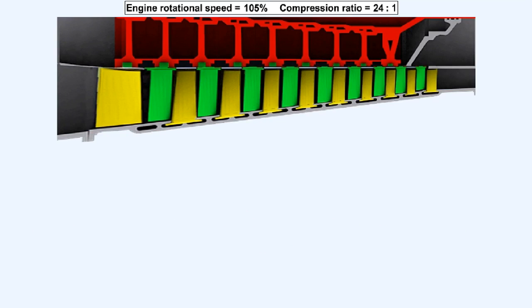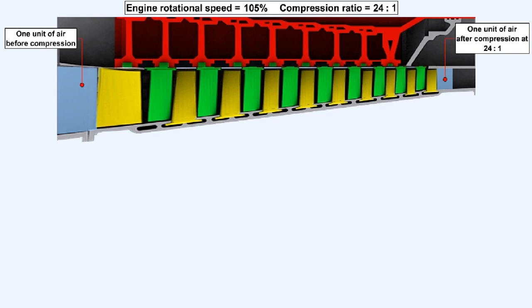If, on the other hand, the engine is allowed to rotate faster than its design maximum, then its compression ratio will increase accordingly. In this case the engine is operating at 105% of its optimum figure and the compression ratio has increased to 24 to 1. The volume of the one unit of air entering the compressor will reduce further than it would at 100% RPM because the compression ratio is now 24 to 1.